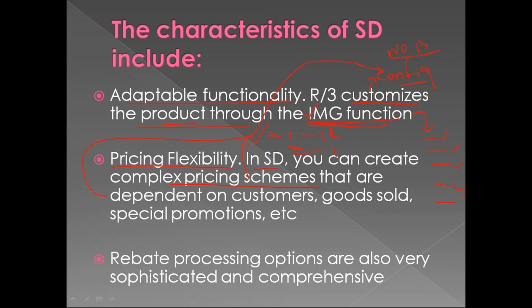Rebate processing: a discount is given immediately - for example a 10% discount on a 10,000 rupees fan means the customer pays 9,000. But a rebate is given under certain conditions - for example, if any customer purchases 1,000 fans in the entire year 2020, then at the end of the year after December 31st they will search...